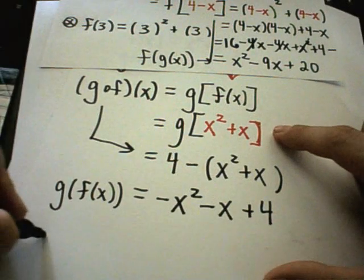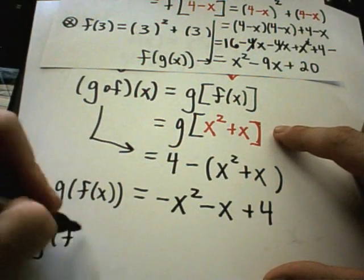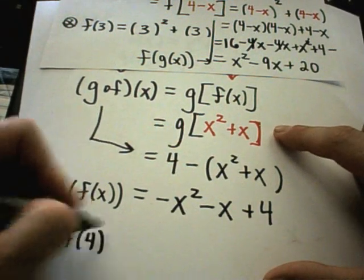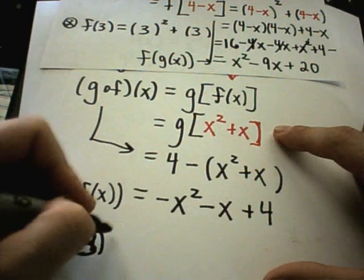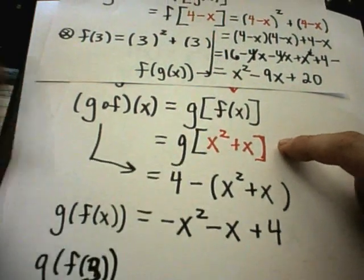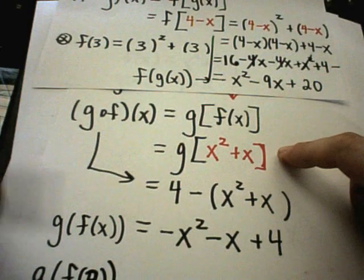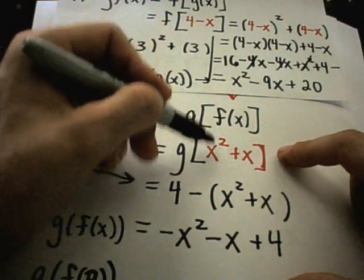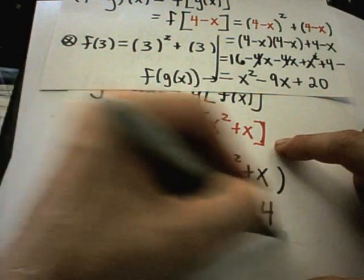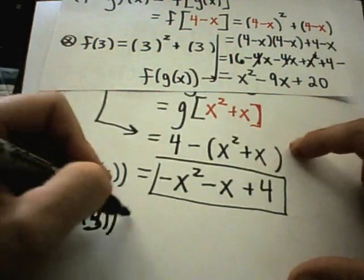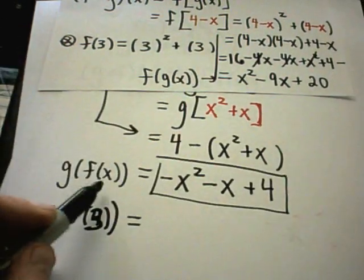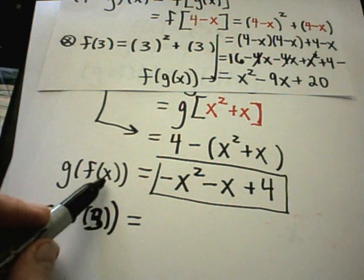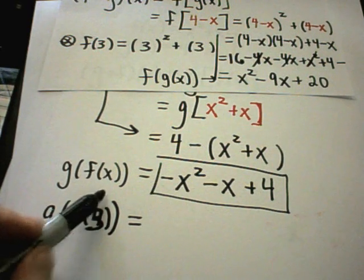Suppose the original problem was to find g of f of 3. The first thing I would do, just like before, is find g of f of x just like it is, and I would get this stuff.